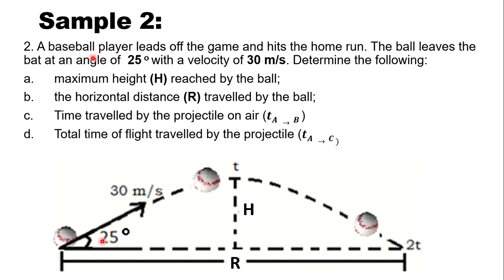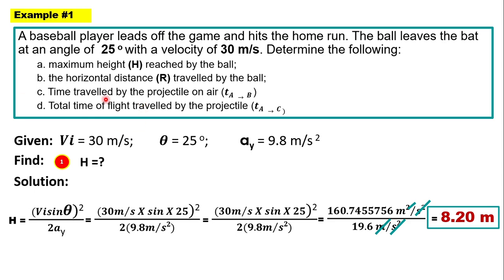Sample problem number two: a baseball player leads off the game and hits a home run. The ball leaves the bat at an angle of 25 degrees with a velocity of 30 meters per second. Given: angle θ = 25°, initial velocity V_i = 30 m/s, and acceleration due to gravity = 9.8 m/s².